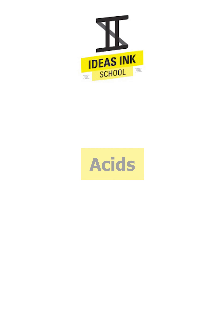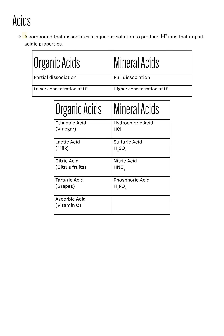Let's begin the chapter with acids. An acid is a compound that dissociates in aqueous solution to produce hydrogen ions that impart acidic properties. There are two types of acids: organic acids and mineral acids.